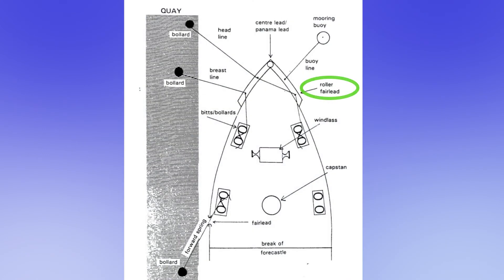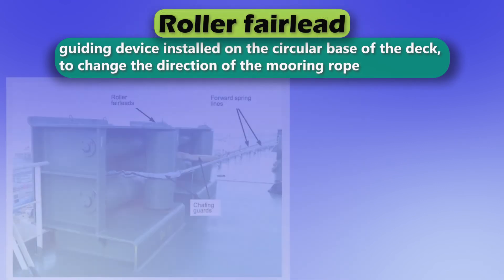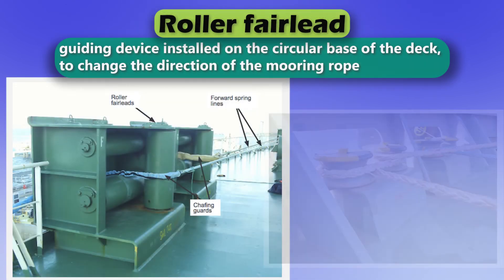Roller fairlead. A guiding device installed on the circular base of the deck to change the direction of the mooring rope.